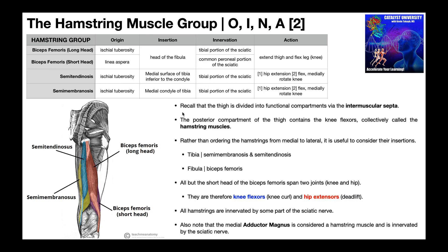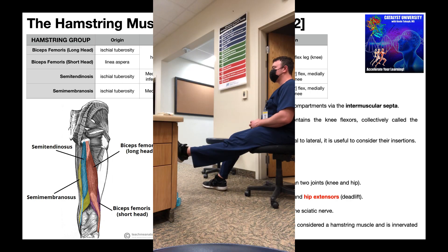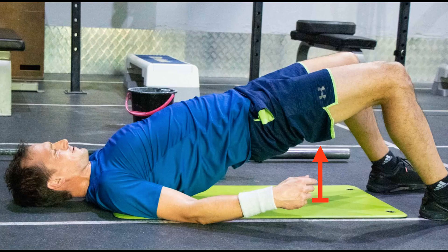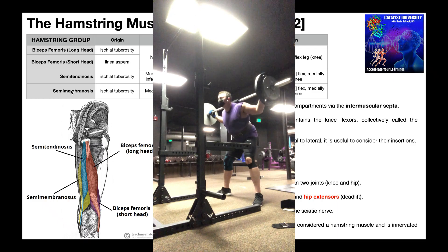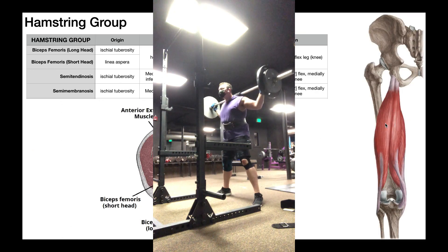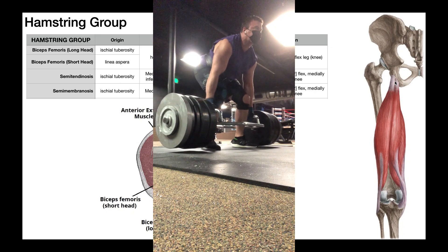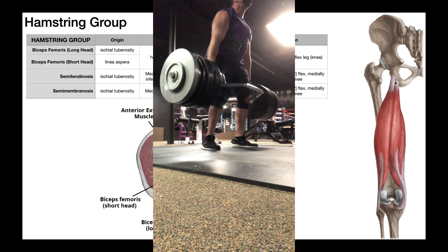The hamstrings are good for knee flexion, as you can see in this video. All four — both heads of biceps femoris, semitendinosus, and semimembranosus — participate in knee flexion. For hip extension, the biceps femoris short head does not participate, but all the others do. Good exercises targeting hip extension include a good morning, as seen here in the video, or a deadlift, both of which involve hip extension to some extent.